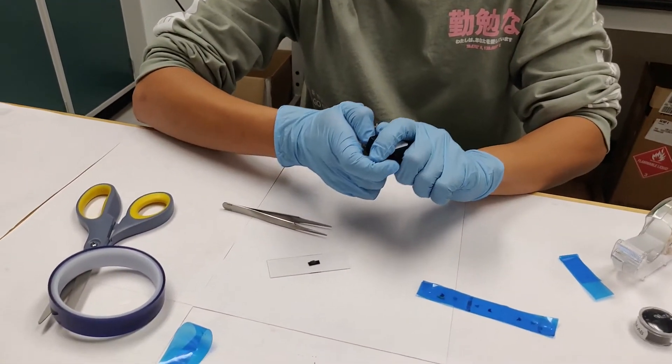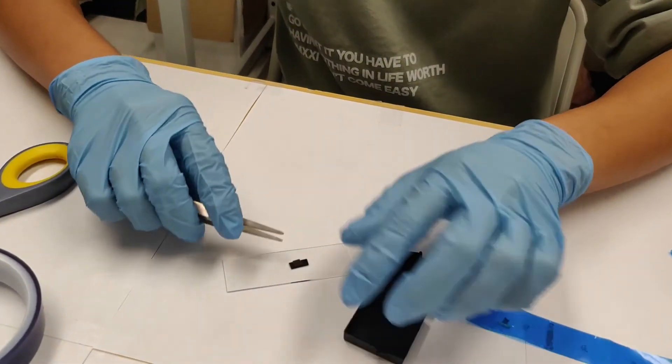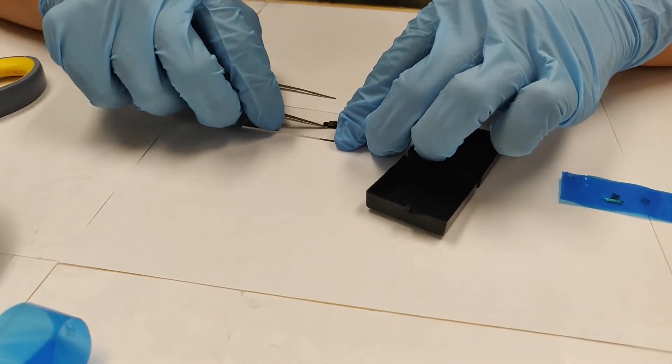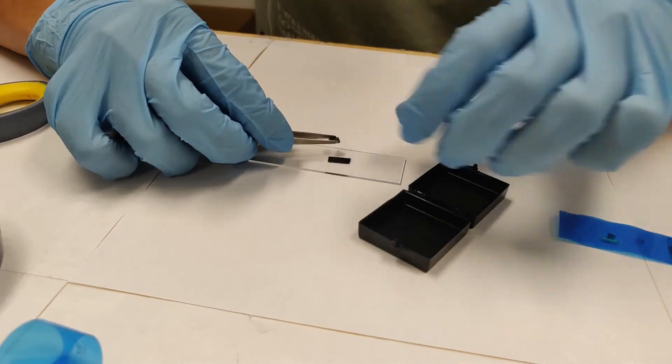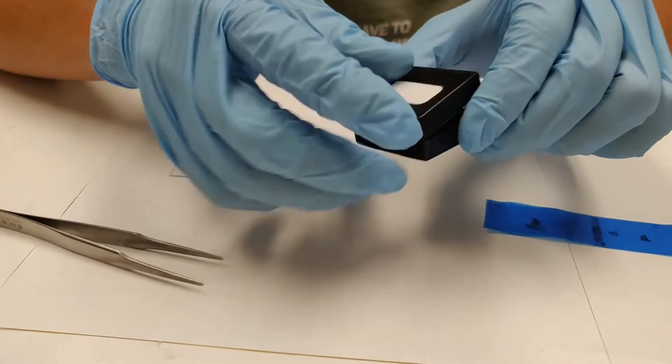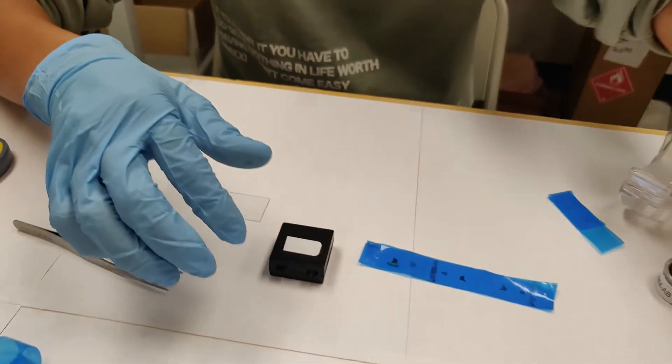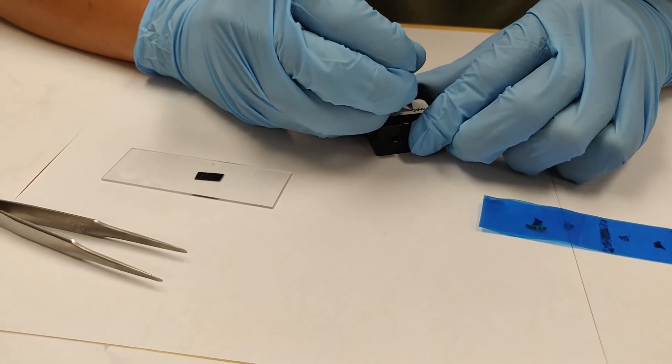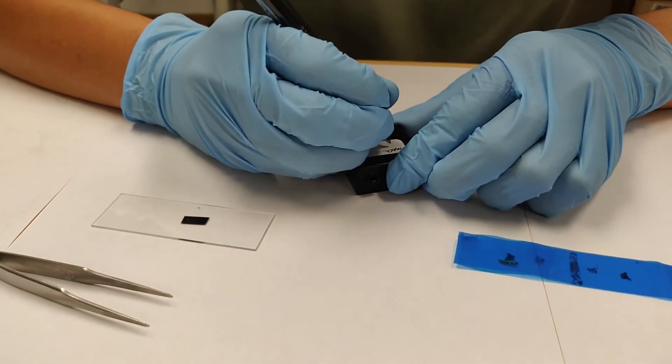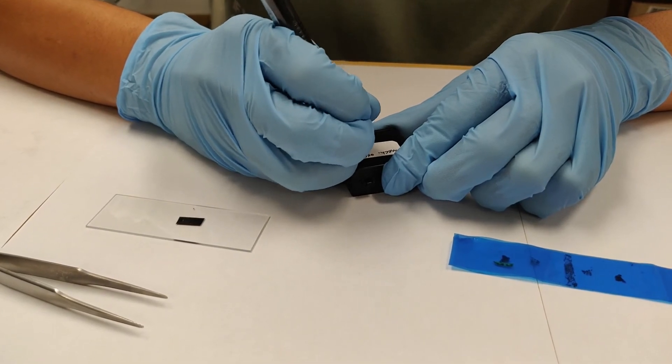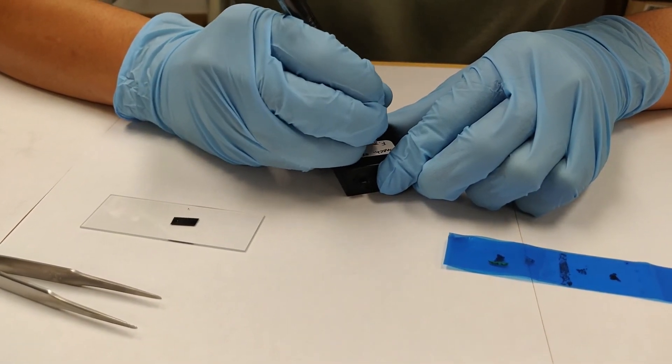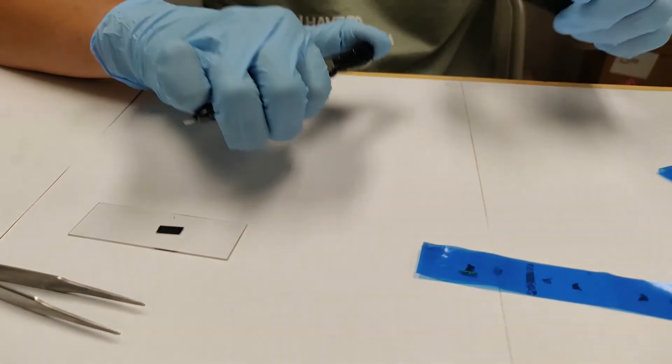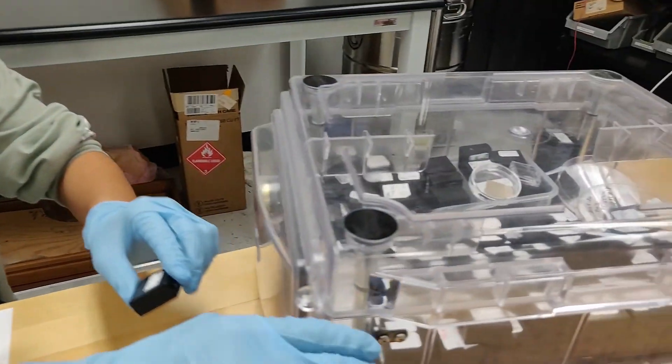But to store it away, you want to put it in a box. Remove it from the tape. Place it in the box. Then you will label the box. And then you place it in the desiccator so it doesn't oxidize.